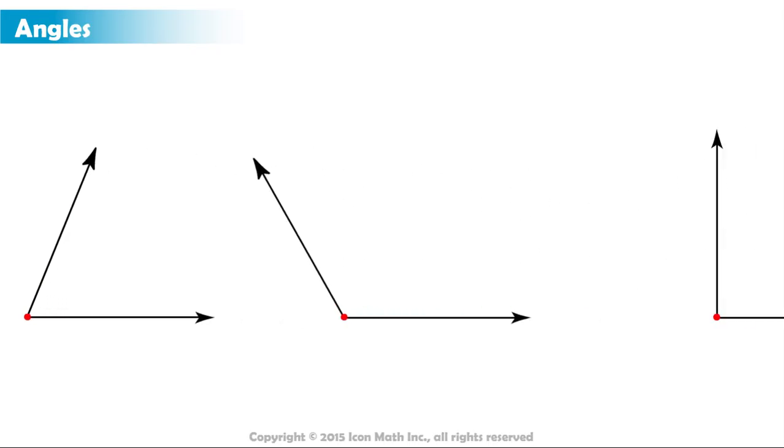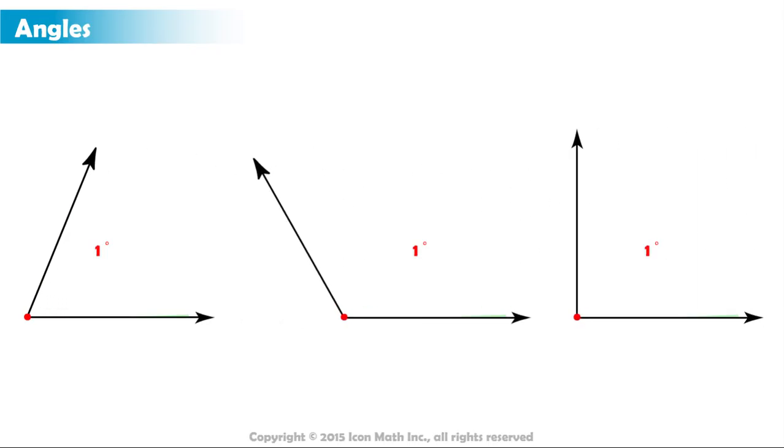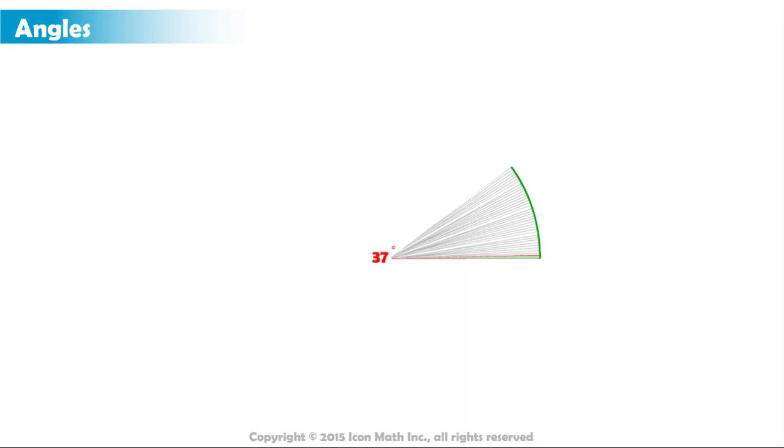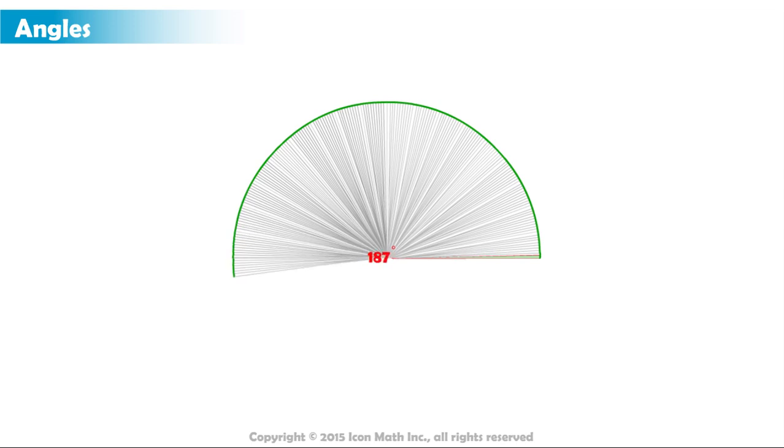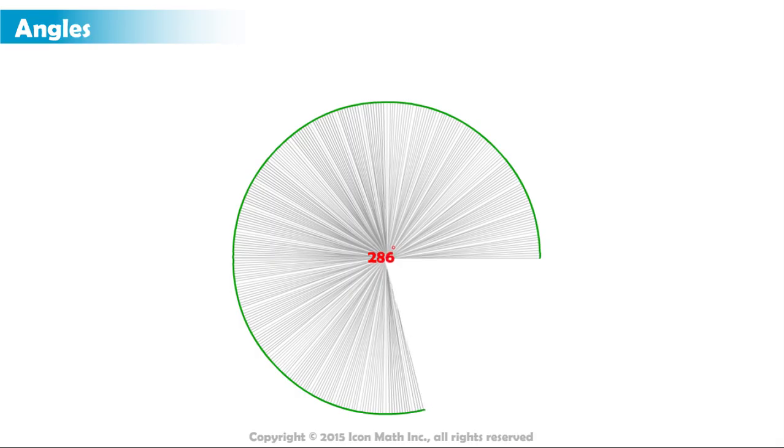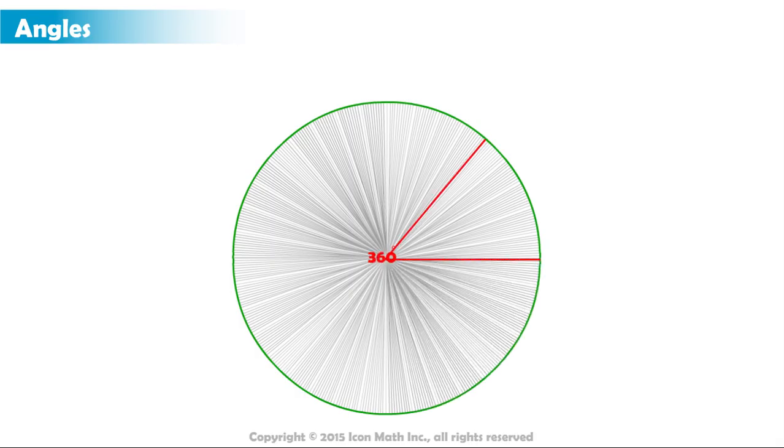And to tell the difference between angles, we use degrees. A degree is defined as one part out of 360 equal parts that make up a full circle covering all possibilities of the openings between the two rays.